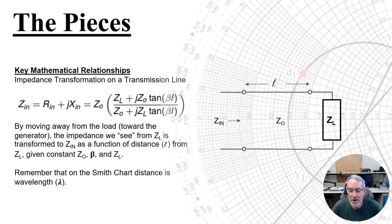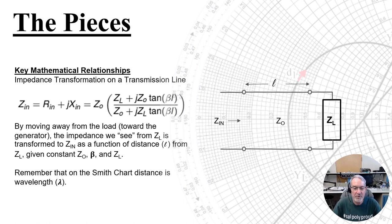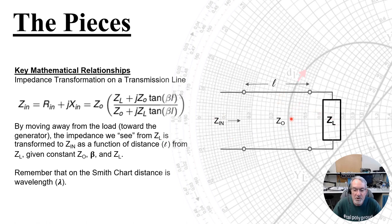Now let's look at our key mathematic relationships. I'm going to make no effort at proof or derivation here — just wanted to remind you that these exist. Key is this impedance transformation on a transmission line. By moving away from the load toward the generator, the impedance that we see from Z sub L is transformed eventually to Z in as a function of this distance L.